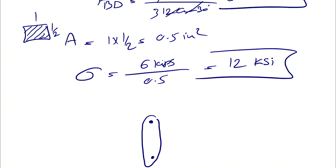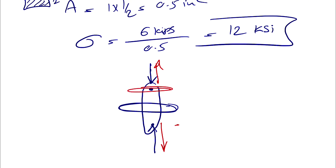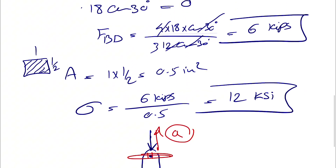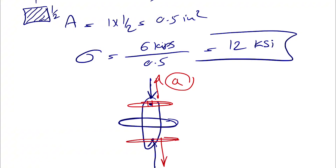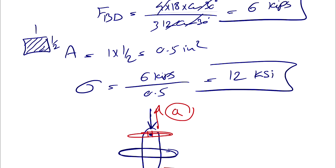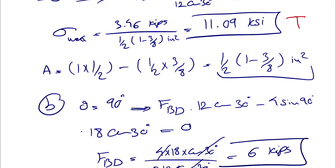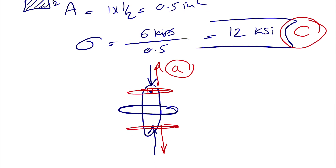To summarize: when member BD is in compression, the area is the full bar cross-section. When it is in tension, the area is the net section where the holes are located, so we subtract the pin hole area. In part (a), BD was in tension with stress 11.09 ksi. In part (b), BD was in compression with stress 12 ksi.